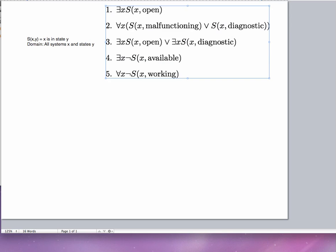Let's begin with looking at the first statement here. The first statement would say this part is simple enough. It would be saying there exists something, there exists an x such that S(x, open) is a true statement.